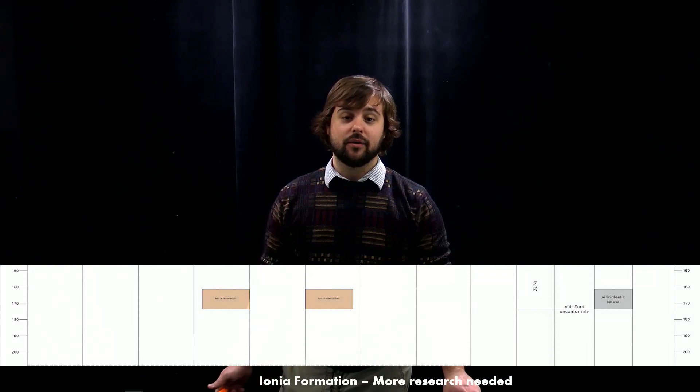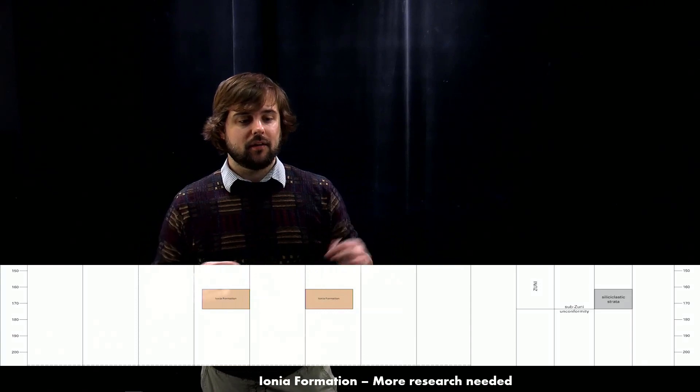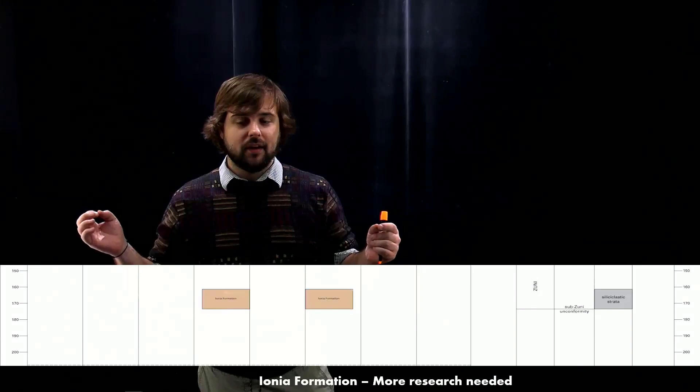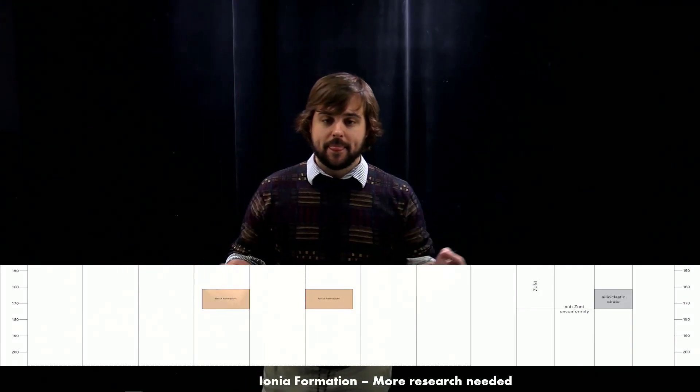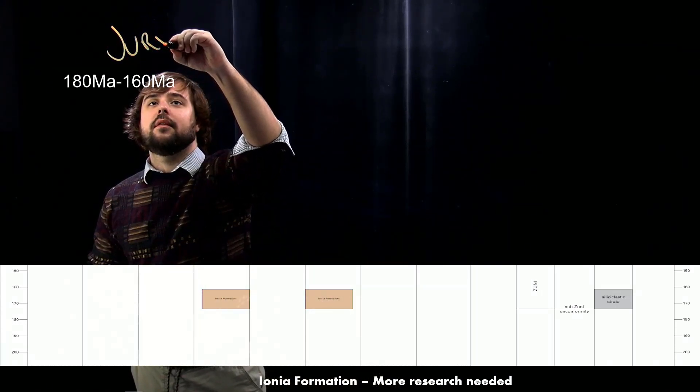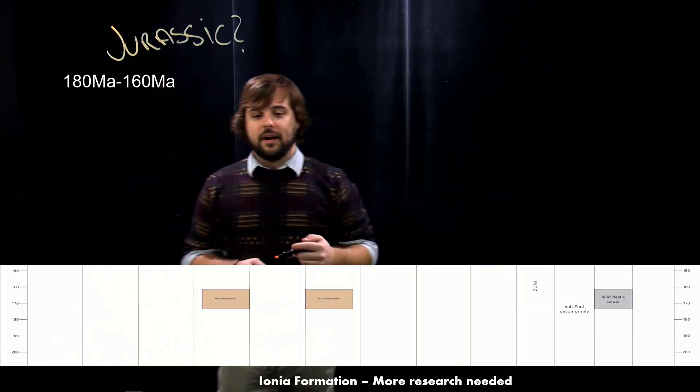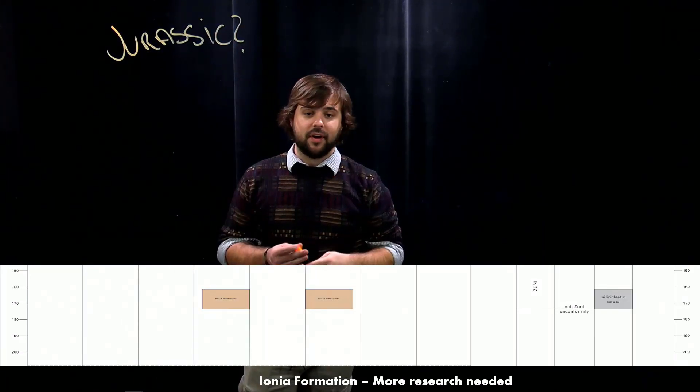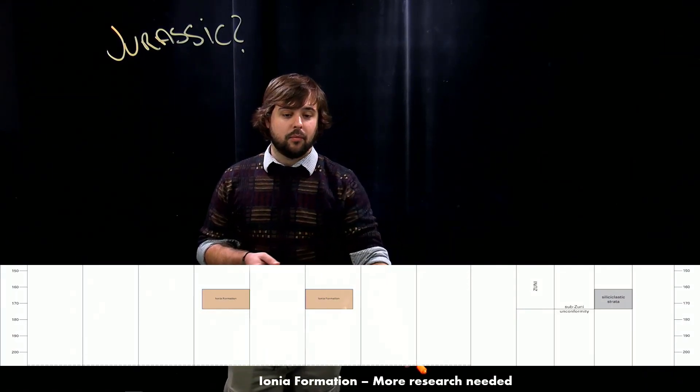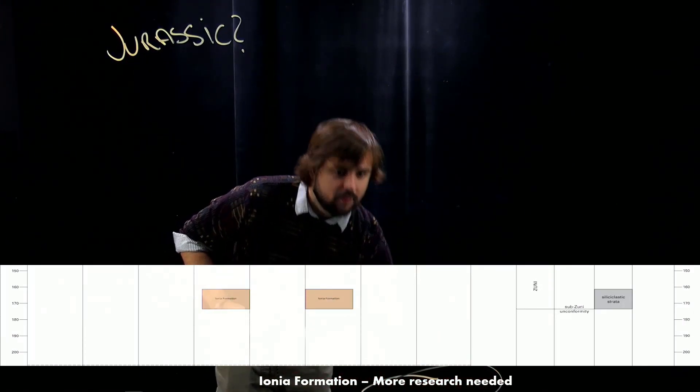Next up, we have the Ionia formation. This is actually a very poorly expressed layer, and analyses of the pollen has given mixed results. Some people seem to think that it belongs to the Jurassic, but other people have argued that it actually belongs to the Pennsylvanian, and that it's not Jurassic at all. So that's actually still up for debate, and more research is needed.